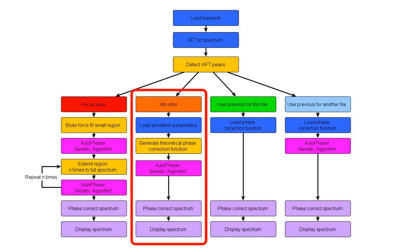The ab initio mode of phasing works for Bruker ICR files that contain information about how the ions were excited inside the ICR cell. Autovectus can then use that information to calculate the theoretical phase correction function for that spectrum. Unfortunately, this theoretical mode can't be used for Orbitrap spectra because there's no information stored in those files that could be used to create a theoretical phase correction function. And even for ICR spectra where the theoretical phase correction function can be calculated, it's usually not accurate enough to be used by itself, as space charge effects and other instrument issues can adjust the true phase correction function. Therefore, Autovectus uses the theoretical phase correction function only as a starting point, and then applies its genetic algorithm to optimize the phase correction function to the ions that are actually in the data.